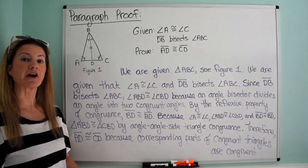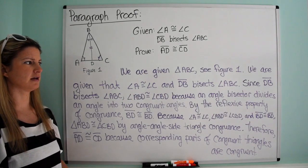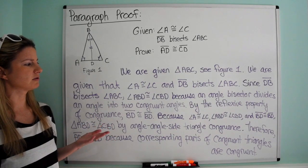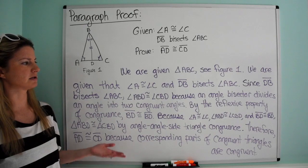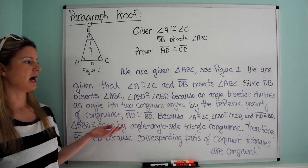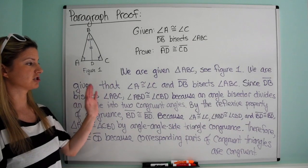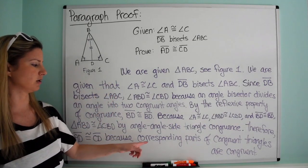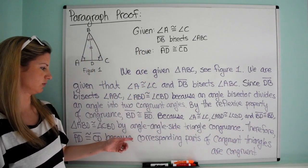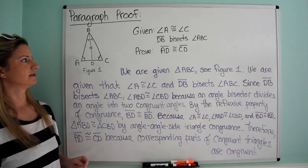So here's an example of a paragraph proof. Every teacher is different — some really like paragraph proofs, and in higher-level math it's not really two-column anymore. As long as you're showing your thinking, that's what matters. Talk to your teacher about what words they'd like you to use and how specific they want you to be. All you're really doing is taking that two-column proof, converting it, and writing complete sentences — like writing out CPCTC as 'corresponding parts of congruent triangles are congruent.'